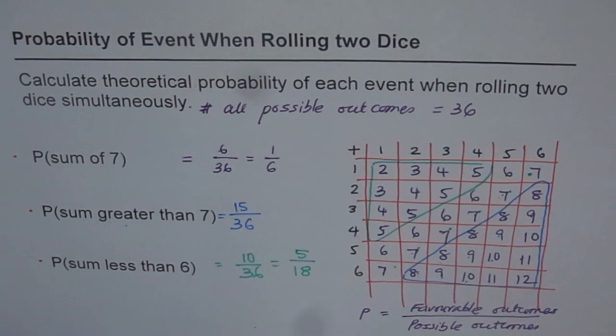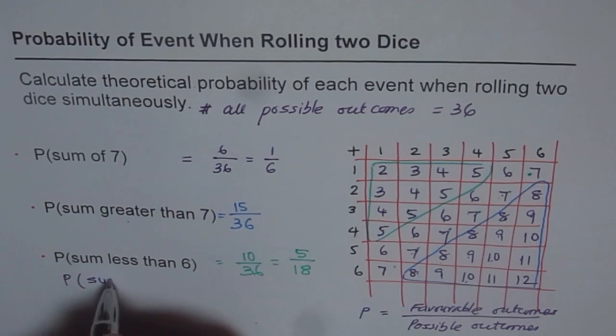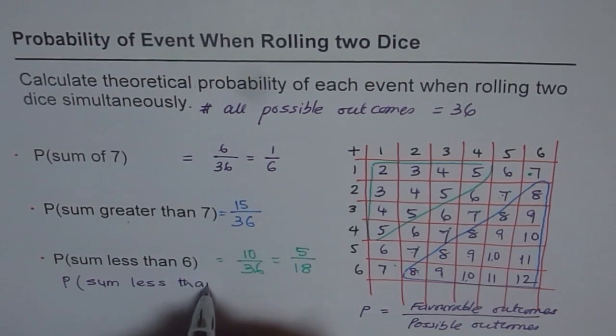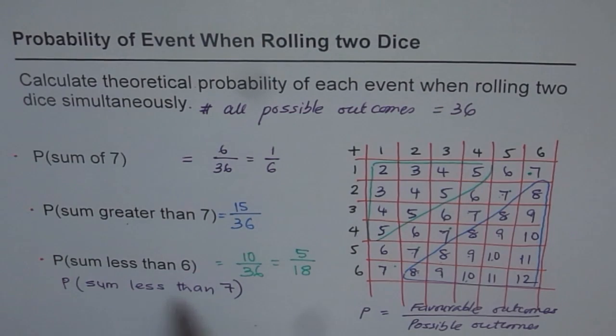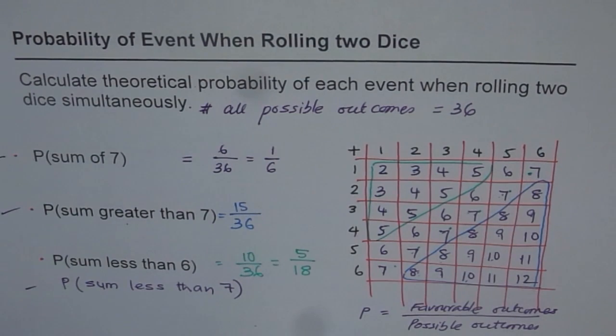Now let me give you a question: figure out probability for sum less than seven. And also check, if you add this, this, and this, what do you get? And why? Explain your answer. That is the question for you to work on. I hope the concept is clear. We'll do one more, and this time we will check the product when we throw the dice. Thank you.